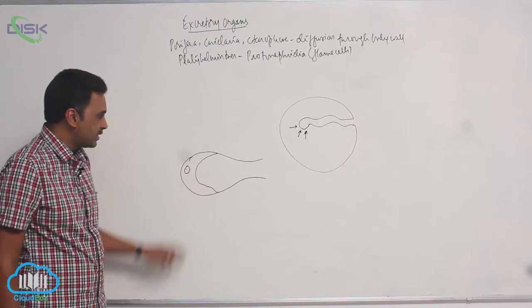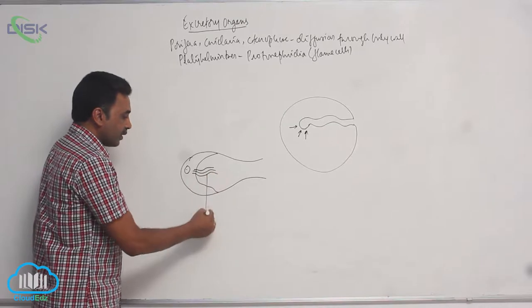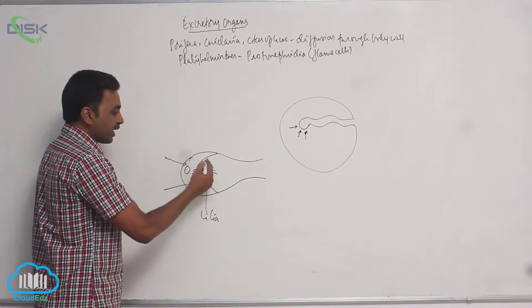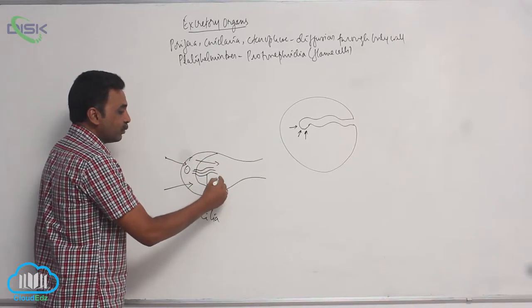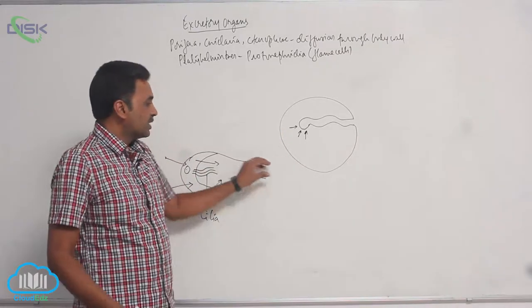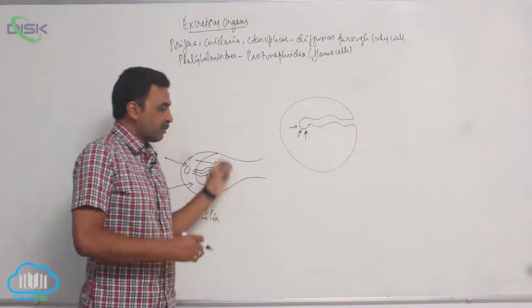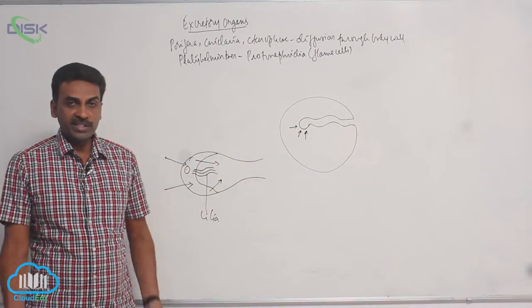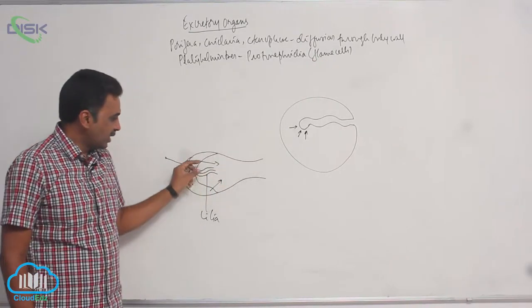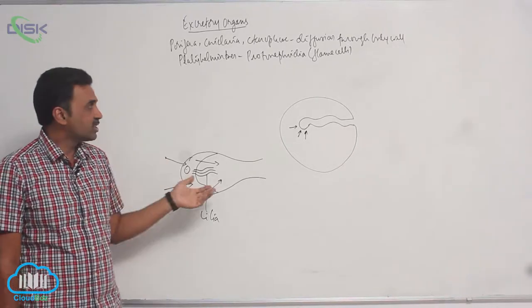Protonephridia are in the form of flame cells. The cell proper has a tuft of cilia. The cell collects the waste and dumps it into the lumen, which connects to an excretory canal that opens outside. It is called a flame cell because this group of cilia resembles a flickering flame of a candle.